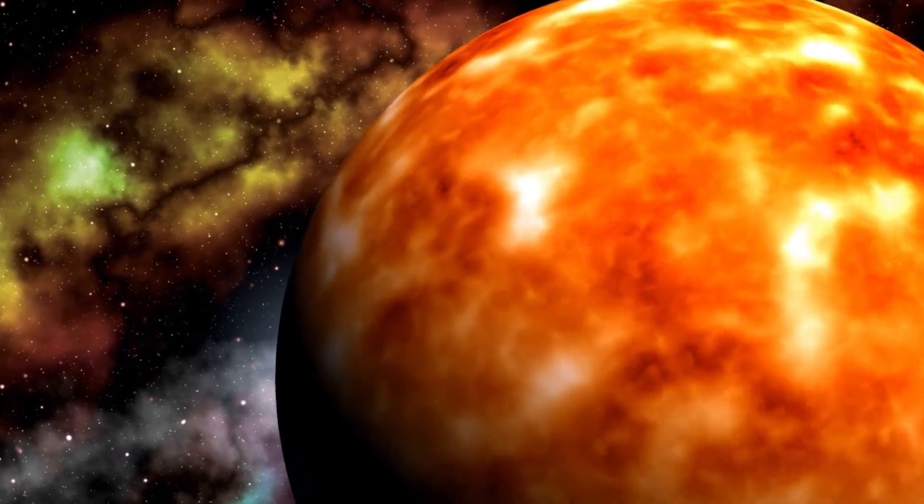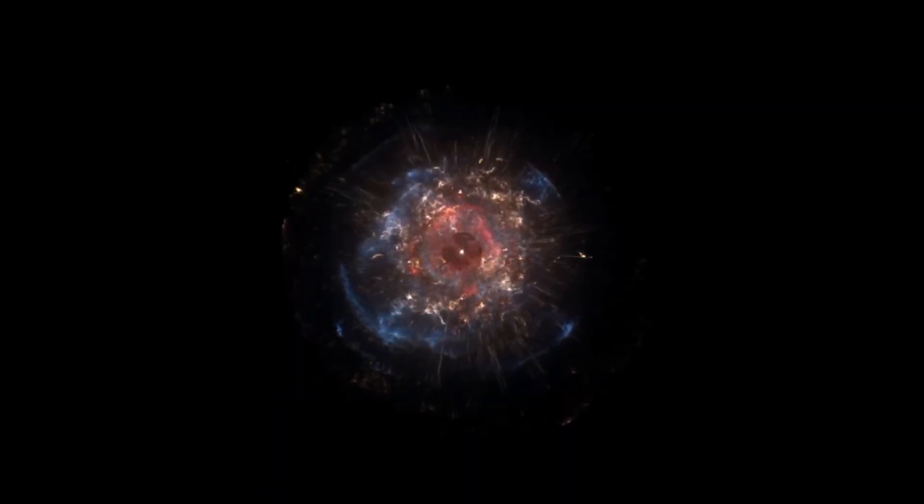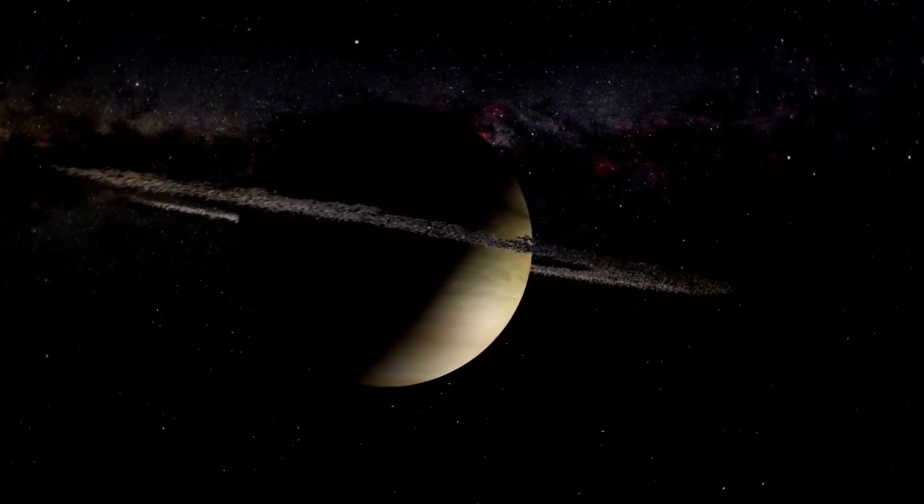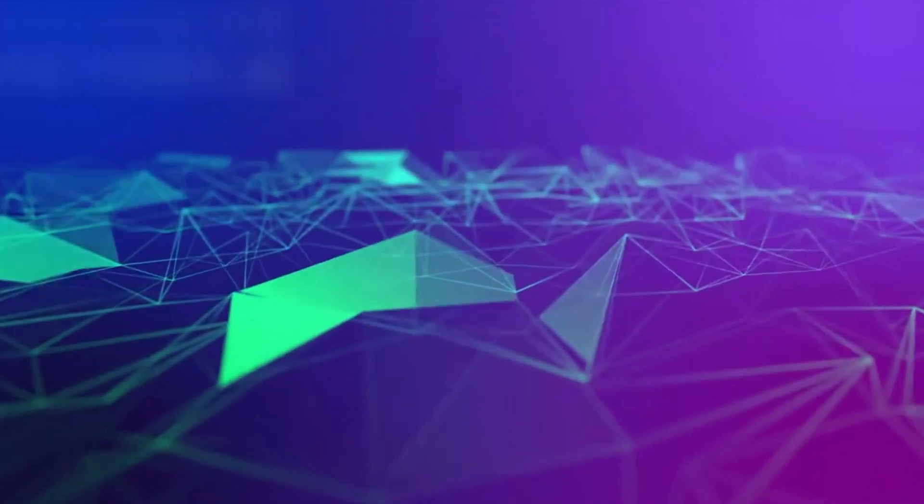This lower temperature means Betelgeuse emits less energy per unit area despite its colossal size. Scientists believe its recent dimming events are tied to changes in the star's internal structure, particularly within its outer helium shell where nuclear fusion continues.